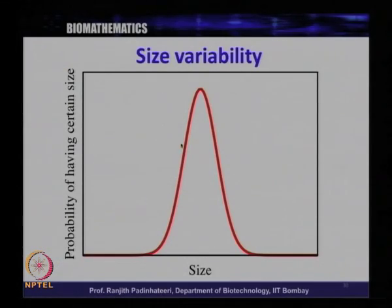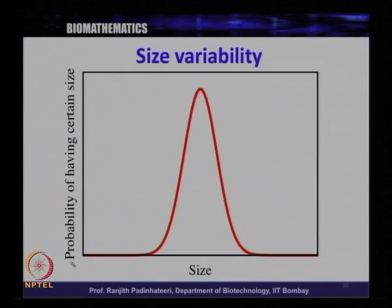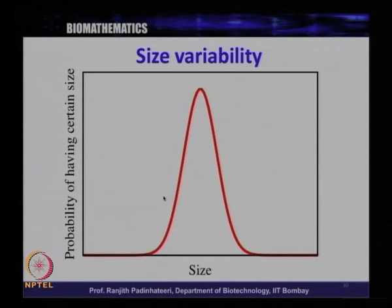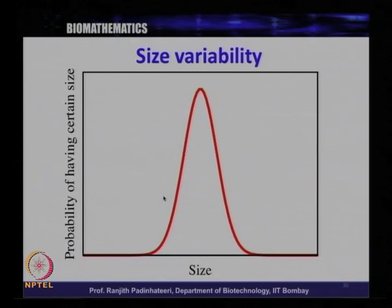One typical distribution called the normal distribution is plotted here. In the x axis you have size or height, and the probability of having a certain size is plotted on the y axis. By understanding the mathematics behind this graph, one can get a lot of information and understand what we mean by variability and what we mean by average. Average, standard deviation, and so on are quantities we very often use to describe experimental data.